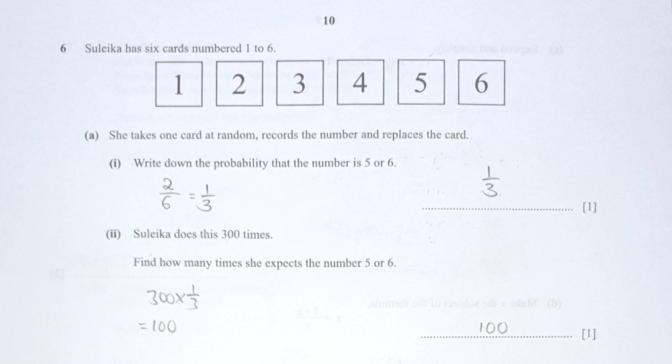For question 6, we have cards numbered 1 to 6, selected at random with replacement. The probability that the number is 5 or 6 — since they didn't specify which one, either is accepted — is 2 over 6, and in simplest form that is 1 over 3. If you do it 300 times: 300 times 1/3 equals 100.